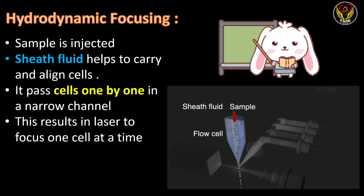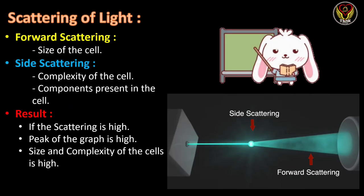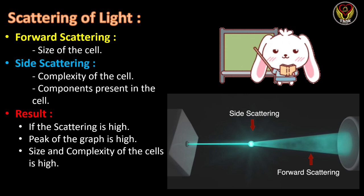The second principle is the scattering of light — the key piece of flow cytometry. This principle means that if we place a shining stone on the path of light, the light gets deviated, reflected, and scattered in all directions. This scattering is based on the structure and size of the stone. The same happens here: instead of a stone, there is a flow of cells, and the light source is a laser. As the laser focuses on the cells, it gets scattered. There are two major types: forward scattering and side scattering. In forward scattering, the light scatters in a forward direction, whereas in side scattering, the light scatters in all other directions.